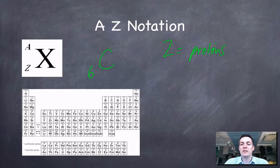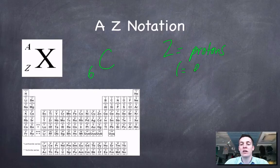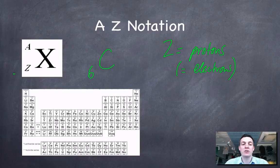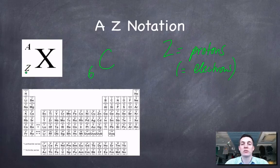And if your atom is neutral — that is to say it hasn't gained or lost any electrons — then this also happens to equal the number of electrons. But there are cases when atoms lose or gain electrons when this rule won't be followed. So it is probably better to remember that the atomic number tells us the number of protons, which is obvious if you consider the fact that the atomic number is also sometimes called the proton number.